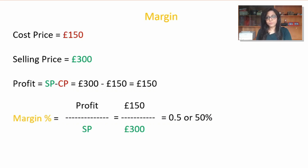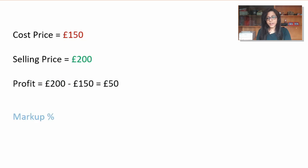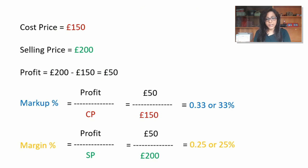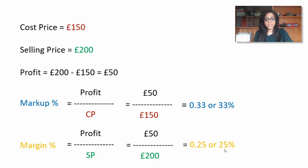Here's another example: same cost price of £150, selling price of £200. Profit is 200 minus 150, which is £50. Markup is profit over cost price: 50 over 150, which is 0.33 — that's 33%. Whereas the margin is profit over selling price: 50 over 200, which is 25%. So you can see your markup is 33% and your margin is 25% — there's a clear difference between the two.